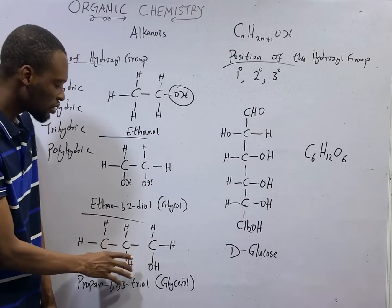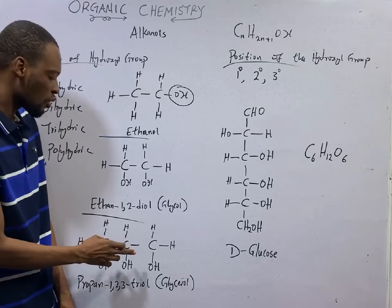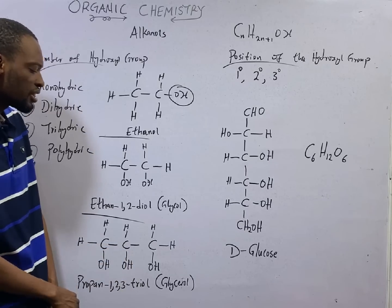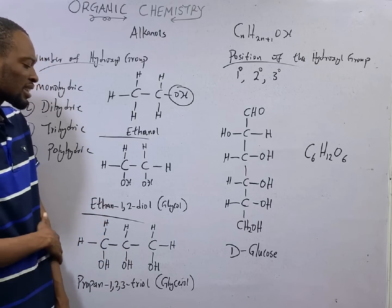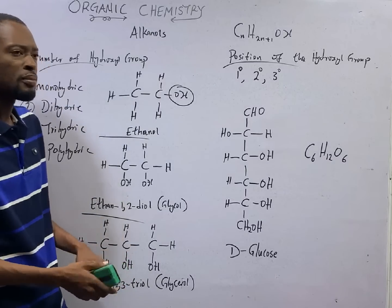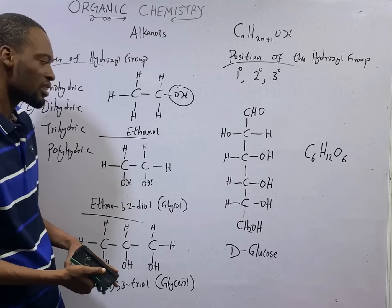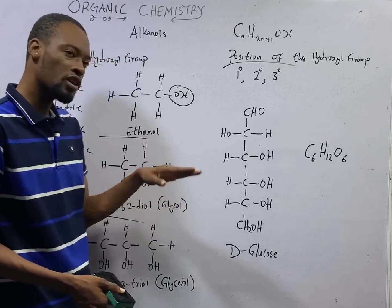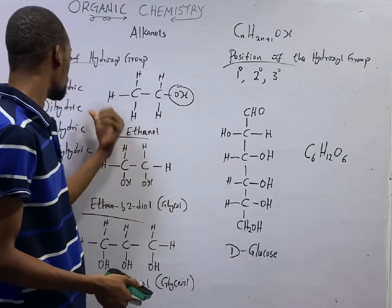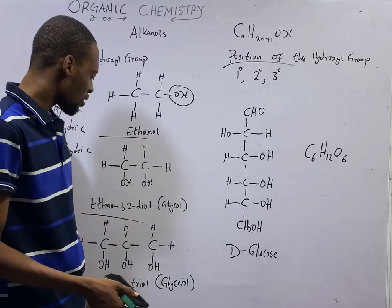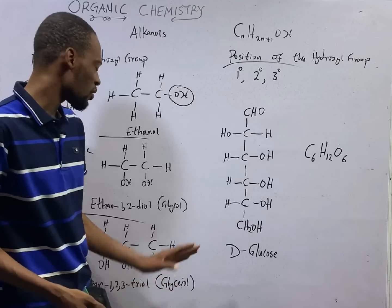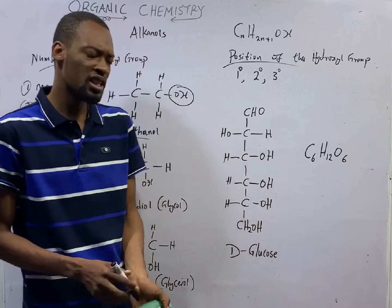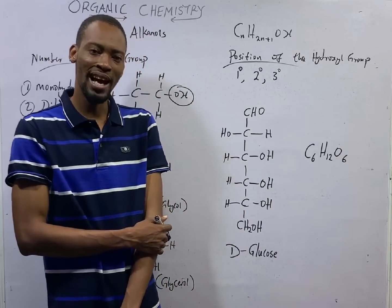Then we have three carbons with three OH — OH on carbon 1, OH on carbon 2, and OH on carbon 3. This is propane-1,2,3-triol. From 'triol,' you can see that it has three OH. The common name for propane-1,2,3-triol is glycerol. So, glycol or ethane-1,2-diol is an example of a dihydric alcohol, while glycerol or propane-1,2,3-triol is an example of a trihydric alcohol. When an alcohol has more than three OH, it is referred to as a polyhydric alcohol.